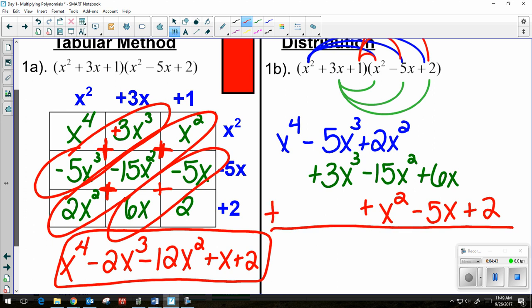And then you're adding. So this comes down x to the fourth. A negative 5x cubed and a positive 3x cubed is a negative 2x cubed. A positive 2x squared, a negative 15x squared, and a positive 1x squared give me a negative 12x squared.